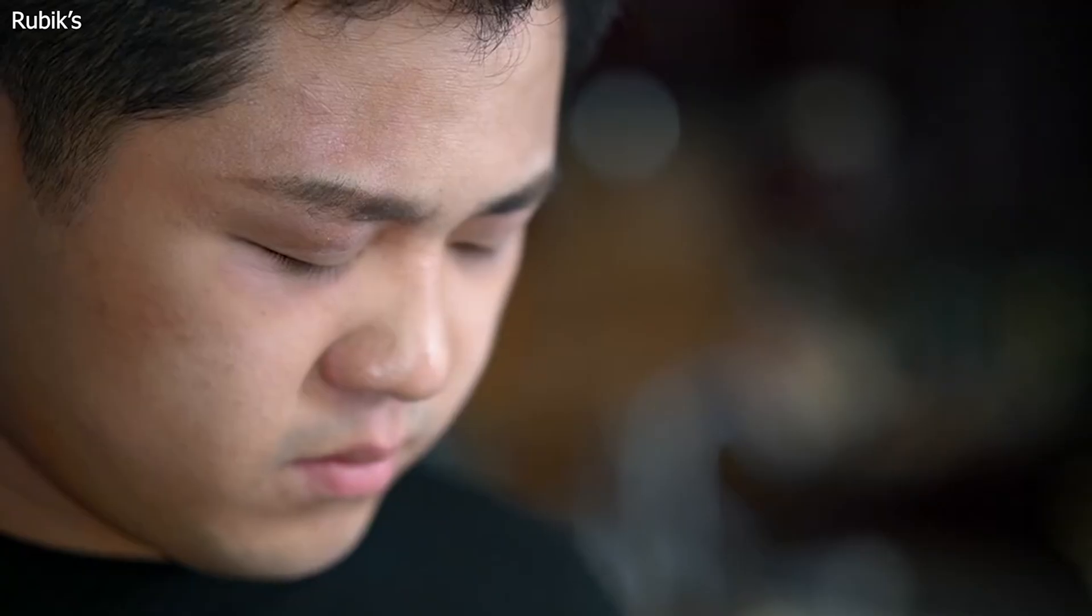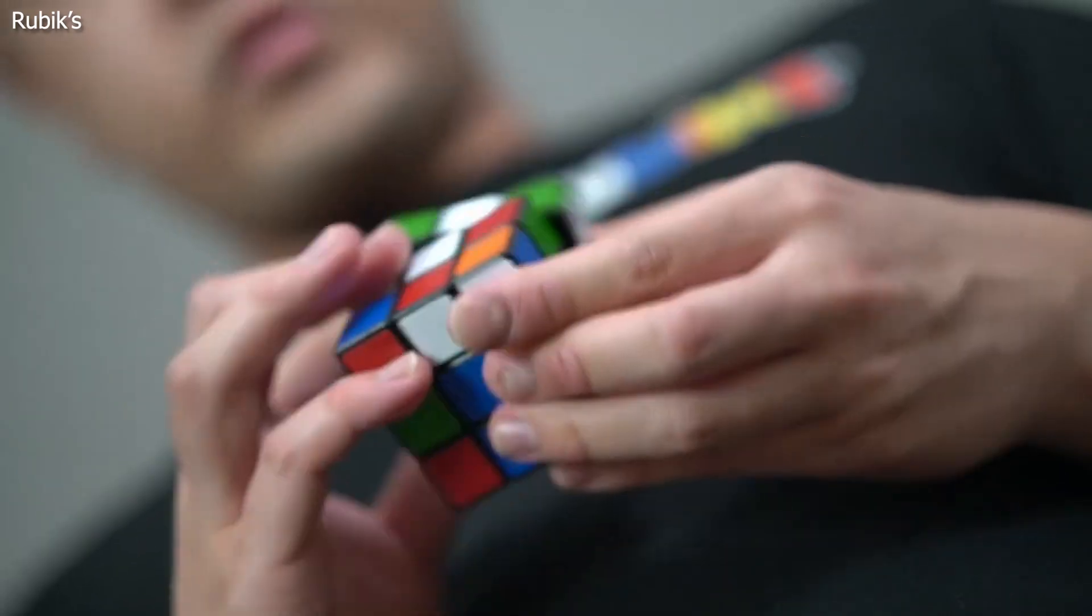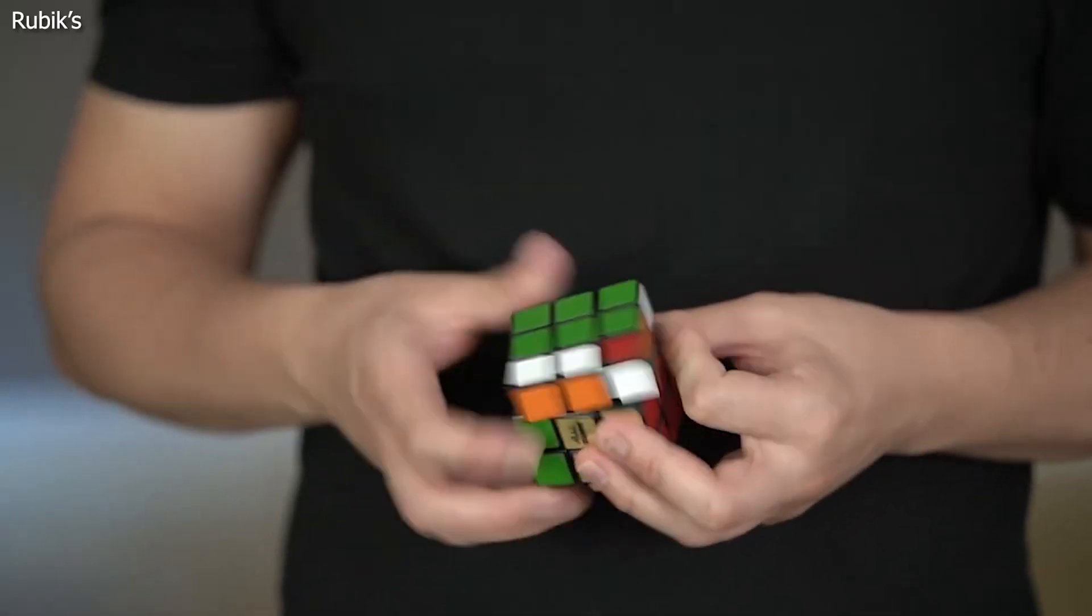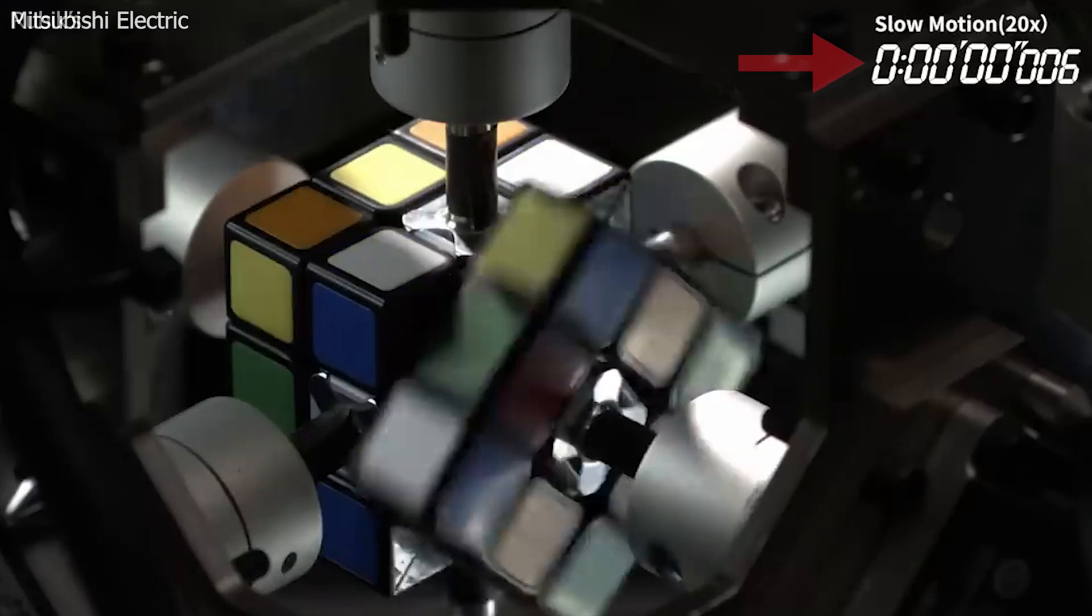Remember the Rubik's Cube, that colorful brain teaser that had everyone hooked back in the 80s and it came back again in the early 2000s? Well, it is back in the spotlight, but this time it's a robot in the mix too.